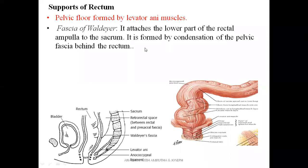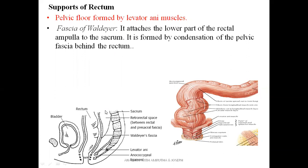Another support is called the fascia of Waldeyer. This attaches the lower part of the rectal ampulla to the sacrum. We can see here this is the Waldeyer fascia, which attaches the lower part of the rectal ampulla to the sacrum. It is a fascia that attaches the rectum to the sacral vertebra, formed by condensation of the pelvic fascia behind the rectum.